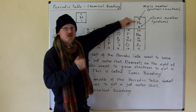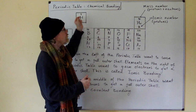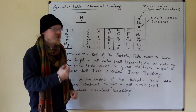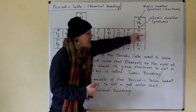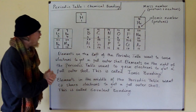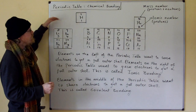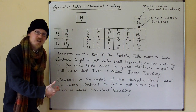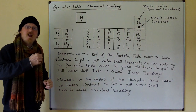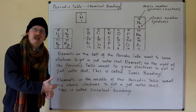Helium has two electrons in its outer shell — a full outer shell — because there are only two in that layer altogether. Neon has eight electrons in its outer shell, because there are eight electrons in the layer altogether, and the same for argon. The different groups of the periodic table are the columns. The rows are shells or layers of electrons, and the columns represent elements with similar properties because they have similar electron structures.